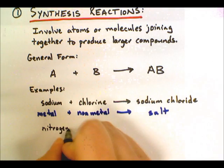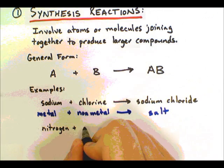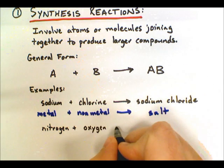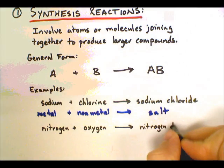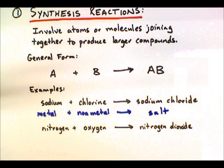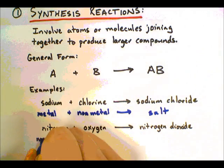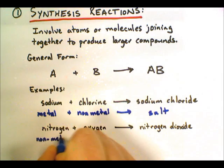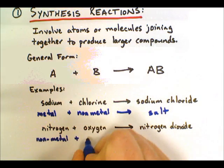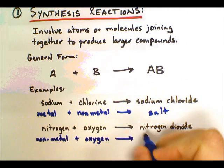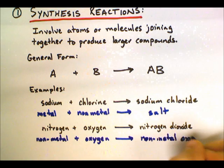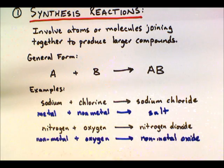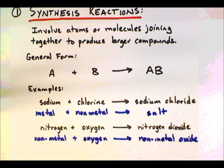Other reactions can take place. Sometimes we use specific names when looking at reactions that involve oxygen. If I take a non-metal like nitrogen and react it with oxygen, I can create a compound known as nitrogen dioxide. Generally, any non-metal that reacts with oxygen will create what we call a non-metal oxide. These become important because non-metal oxides can be used in other reactions.